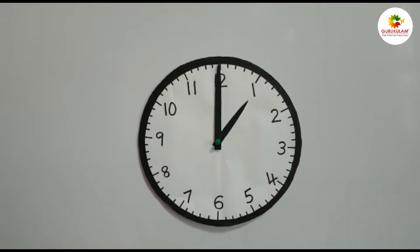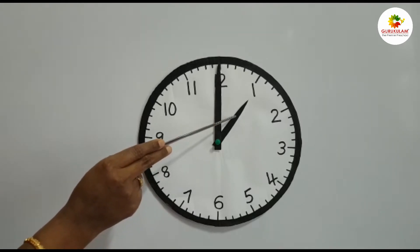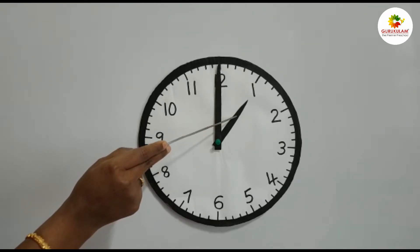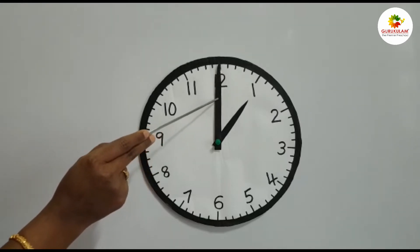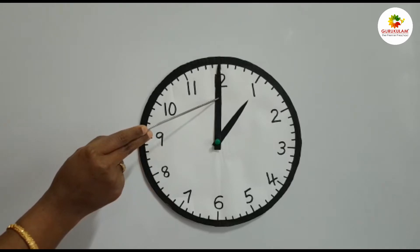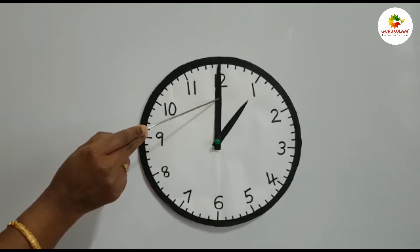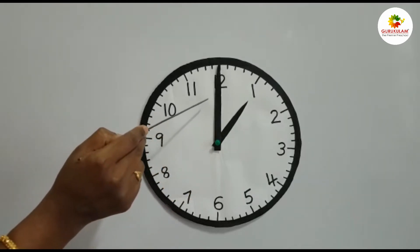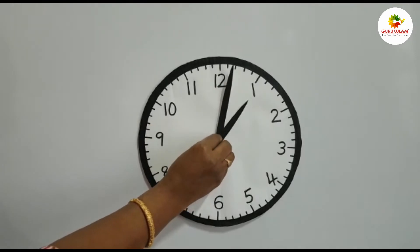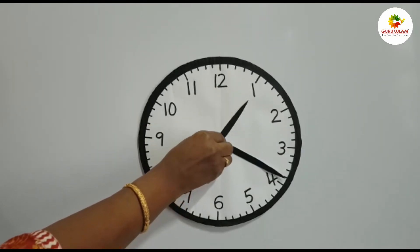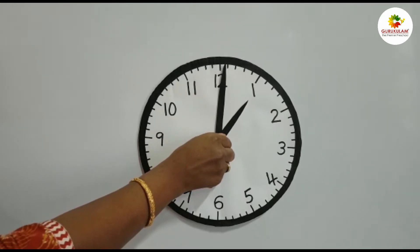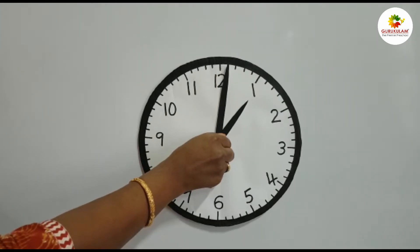Now let's learn how to read the time. This is the hour hand. The hour hand is used to read the hour. The hour hand points to the number of the current hour. This is the minute hand. The minute hand is used to read the minutes. The minute hand moves in a clockwise direction. It starts moving from 12 and comes back to 12, completing 60 minutes.